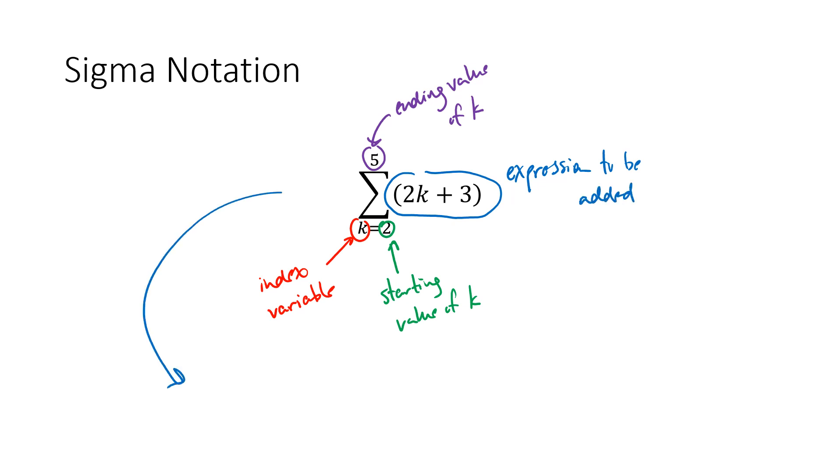So this sum is equal to, we start at k equals 2, so we get 2 times 2 plus 3, and then 2 times 3 plus 3 using the next value of k, and then 2 times 4 plus 3, and finally 2 times 5 plus 3, and then we add all the results together. So 2 times 2 plus 3 is 7, 2 times 3 plus 3 is 9, 2 times 4 plus 3 is 11, and 2 times 5 plus 3 is 13, and we add 7 plus 9 plus 11 plus 13, which works out to be 40.